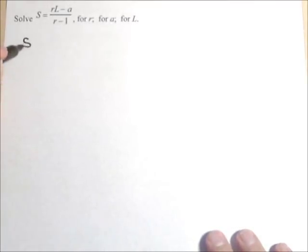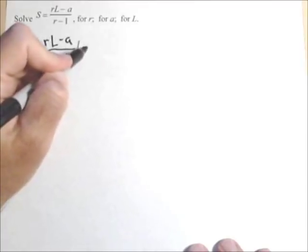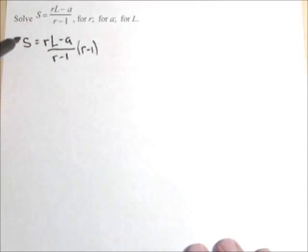So we start with S equals RL minus A over R minus one. The first thing we're gonna wanna do is get that R out of the denominator. We can do that by multiplying both sides by R minus one. Because those will cancel, we no longer have a fraction and R is out of the denominator.